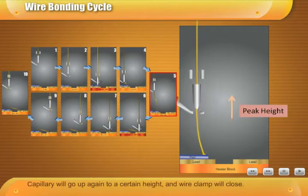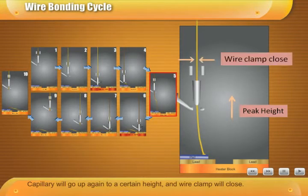Capillary will go up again to a certain height, and wire clamp will close. After that, capillary will go down again to another side of lead pad.